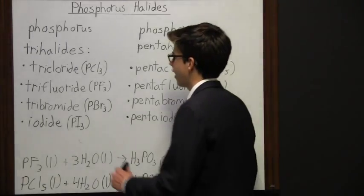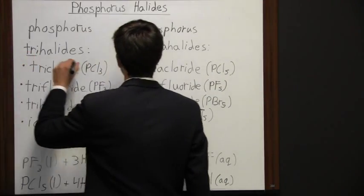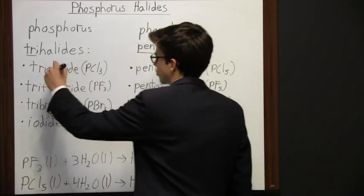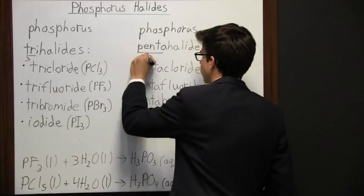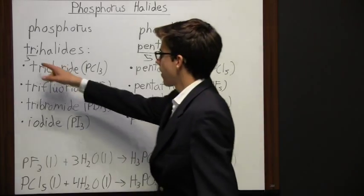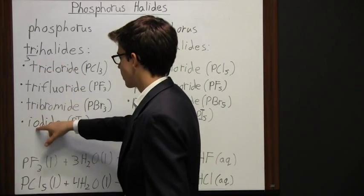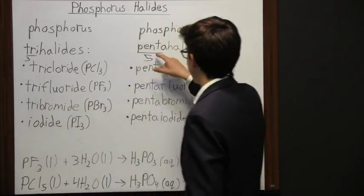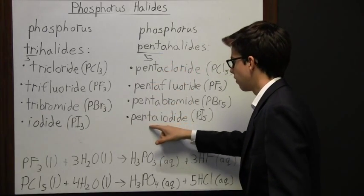Now you may have noticed a pattern here in the prefixes. There we have tri, here we have penta. Tri of course stands for 3 and penta stands for 5. That prefix is in front of all these except for iodide, that's the exception. And penta is in front of all of these.